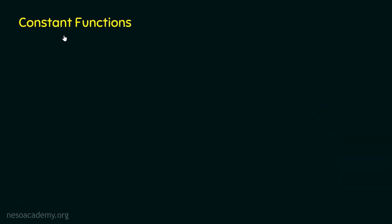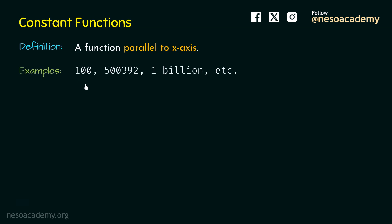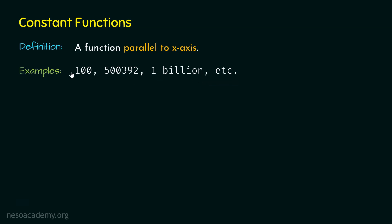What are constant functions? The definition of the constant function is as follows: a constant function is a function which is parallel to the x-axis. Examples include 100, 5, 392, 1 billion, and so on — these are all constant functions.